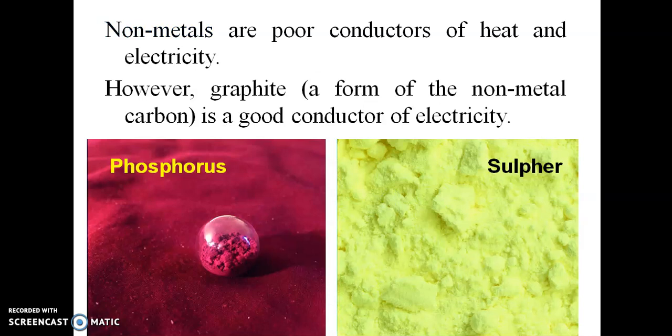Non-metals are poor conductors of heat and electricity. However, graphite — a form of carbon — is a good conductor of electricity.